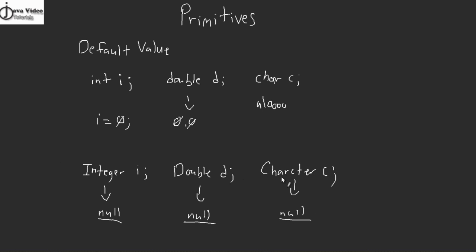In Java, every object is treated equally at the highest level. When you declare an object and don't actually instantiate it or assign it any value, it will be filled with null — it will have nothing in it. And that can be a little bit dangerous, because if you then reference one of these objects in code and try to do something with it, you'll get a null pointer exception — some nasty things happening in your code.